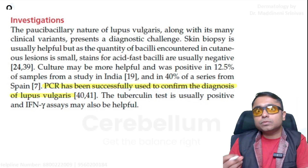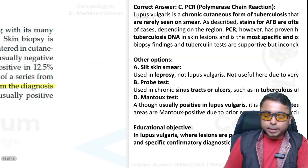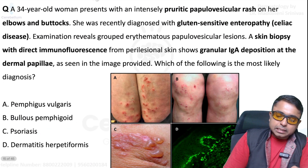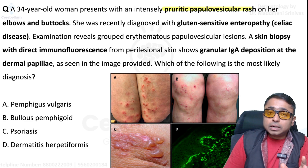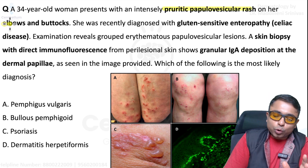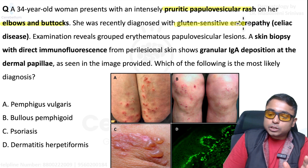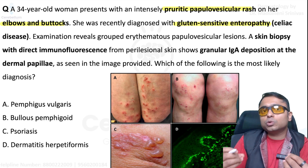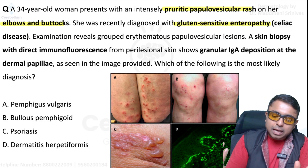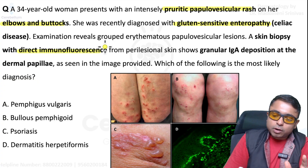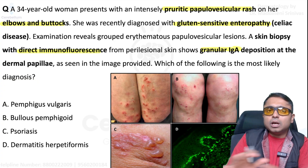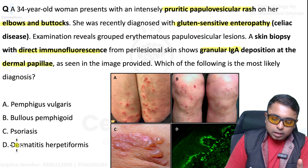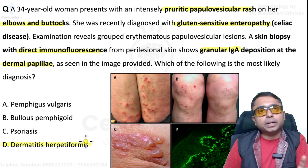Next is a repeat PYQ: pruritic papulovesicular rash on extensor surfaces, gluten-sensitive enteropathy or celiac sprue. Biopsy showing direct immunofluorescence with IgA in a granular deposition — the answer is very straightforward: dermatitis herpetiformis. This is a very simple question.